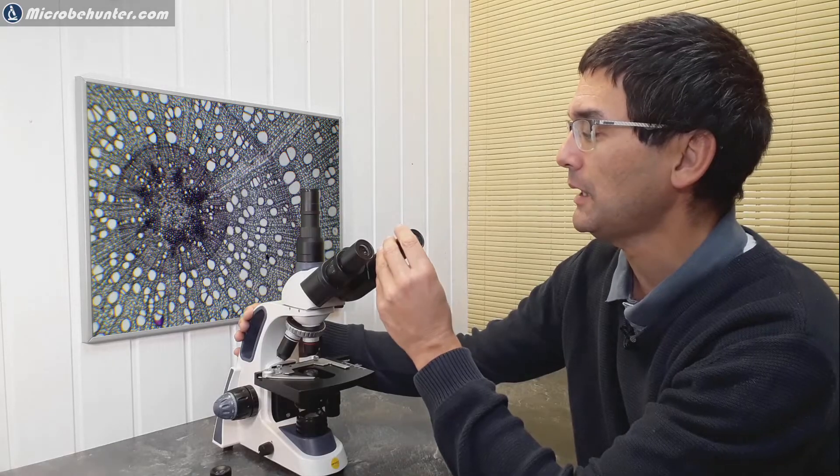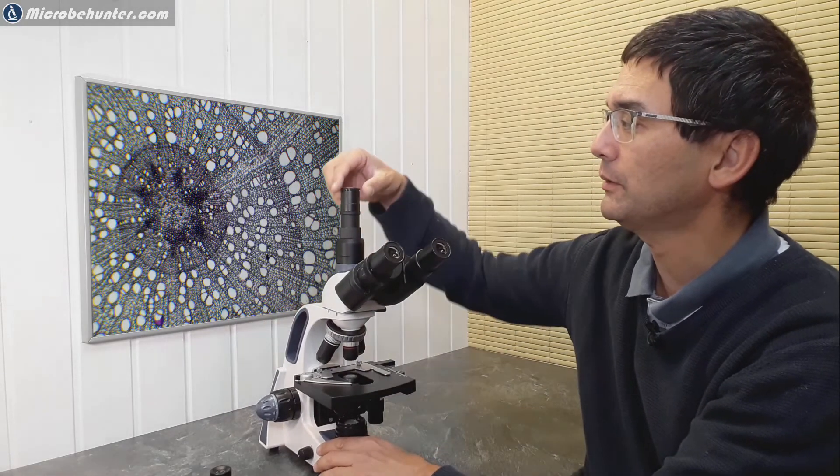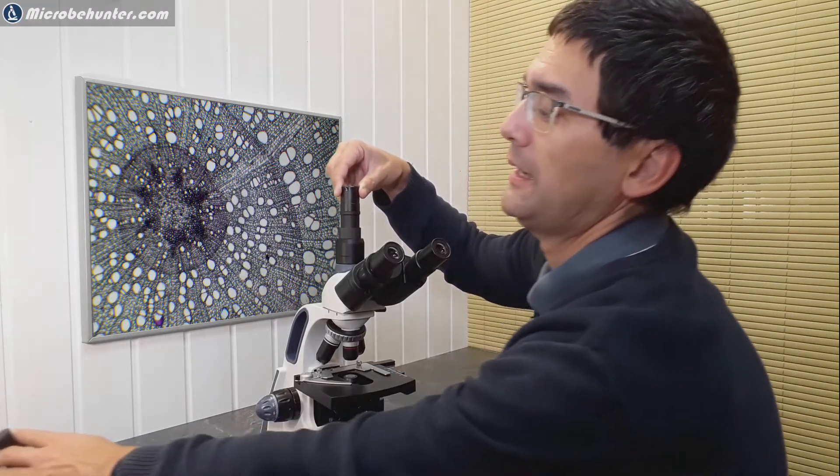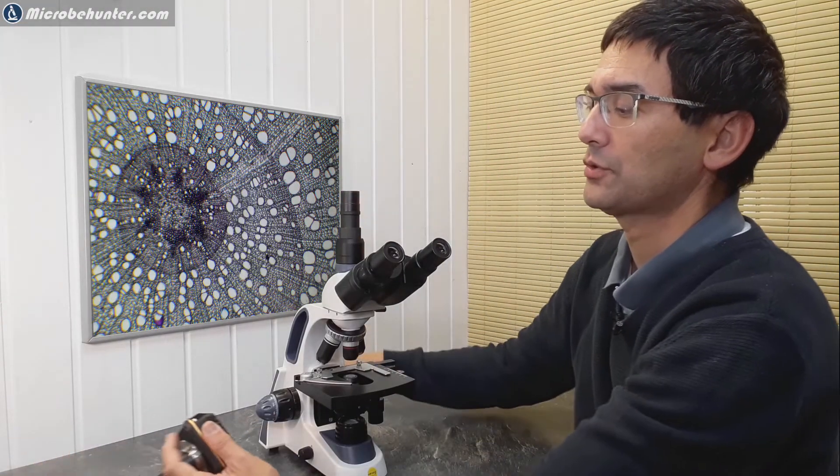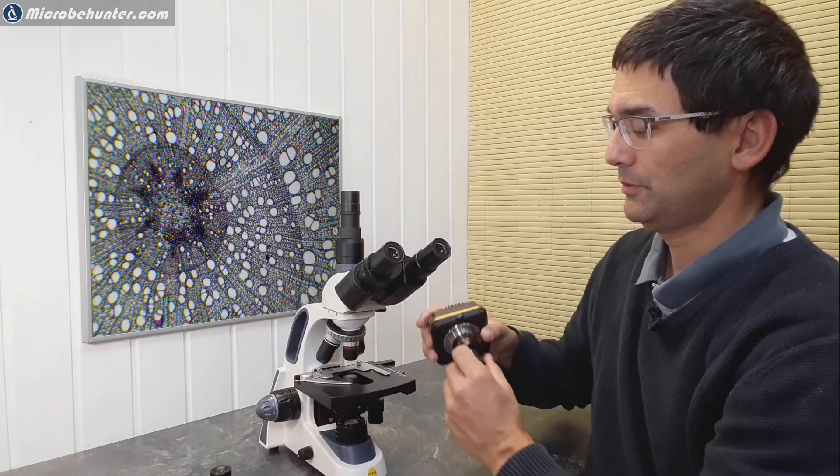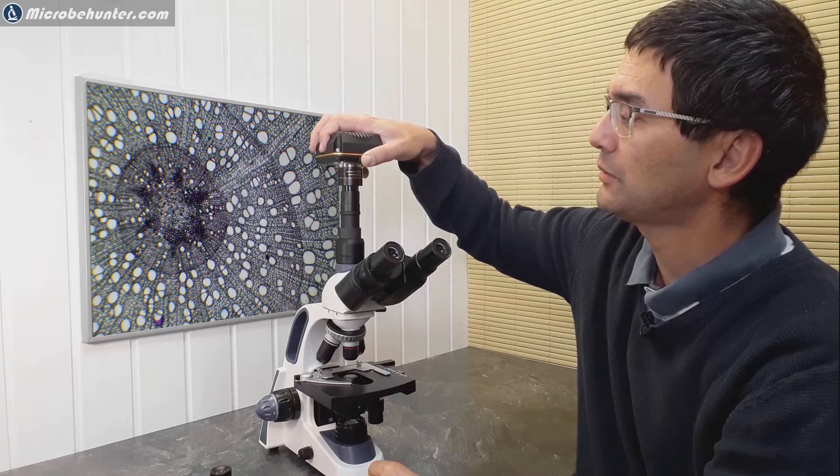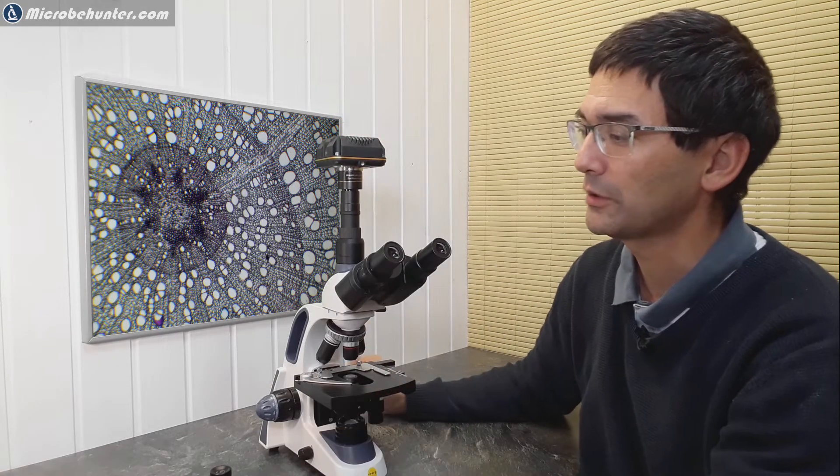Let me put the eyepieces back here again. Let's do the following - I'm just going to show you how I can connect the camera, so I'm going to remove the protective cap here. Over here I have a USB microscope camera. I'm going to remove the protective cap here, and of course you can directly connect it here to the trinocular head, nothing special here.